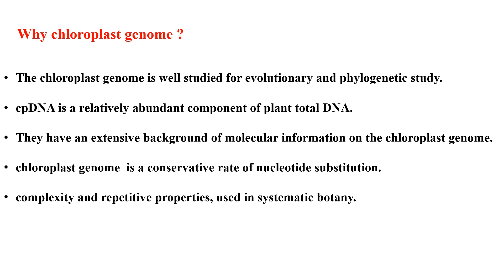Why do we sequence the chloroplast genome? Because the chloroplast genome is well studied for evolutionary and phylogenetic studies. cpDNA is a relatively abundant component of plant total DNA. There is an extensive background of molecular information on the chloroplast genome. Its conservative rate of nucleotide substitution and its complexity and repetitive properties make it useful in systematic botany. This concludes this short video — I hope this was a useful summary, and thank you for your attention.